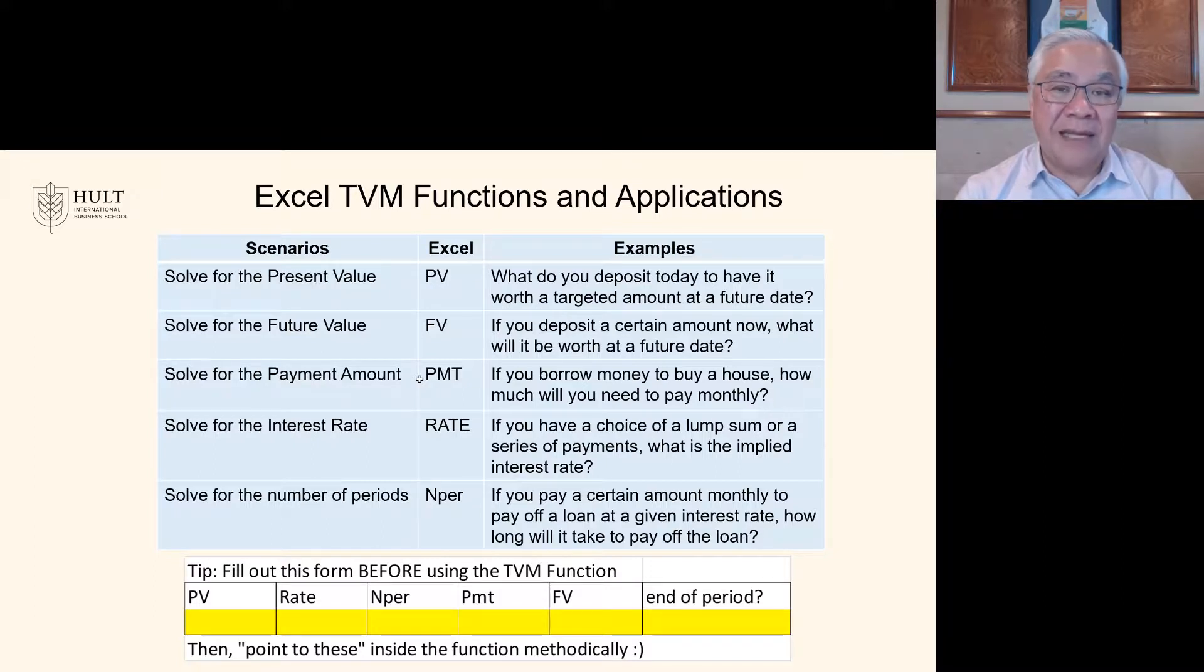So I have a little hint to give you on the bottom. There's this little form. And if you fill out this form in Excel, then when it comes time to do the formula, you're just picking from this list and the chance of error, I believe is much lower. So the elements of this form would be PV, rate, N per, payment, future value, and is it end of period?